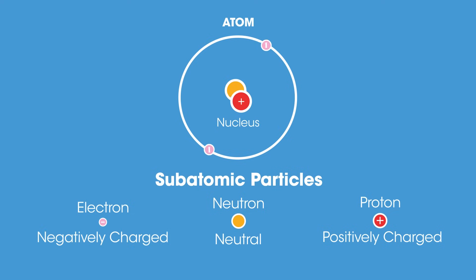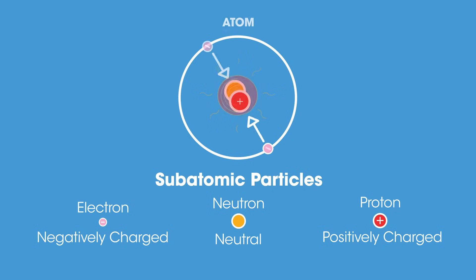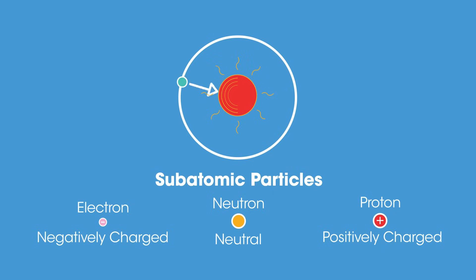Because electrons are negatively charged and the nucleus is positively charged, they are electrostatically attracted to each other — similar to how gravity ensures attraction between planets and the sun.